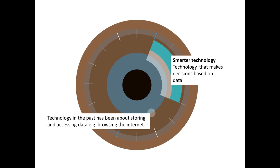The first stage of the internet has really been about digitalising knowledge and information, storing it, and making it easier to access. We literally talk about browsing the internet — it's a passive activity that's really around accessing information.